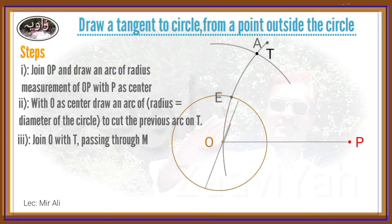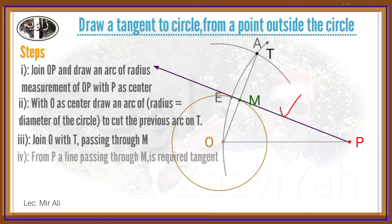Point P, draw line through M. The line PM is the required tangent to the circle from point P.